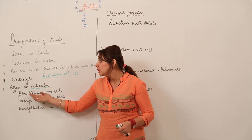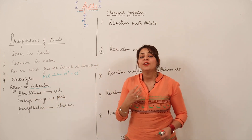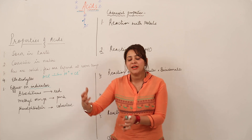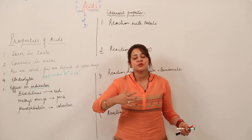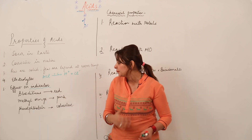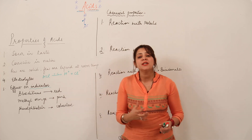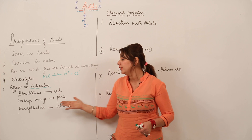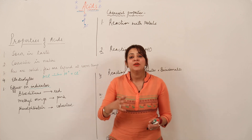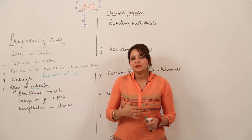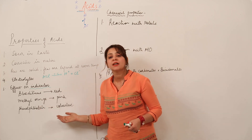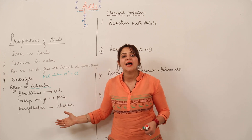Here are a few indicators to explain the effect of acids on them. Litmus: acids turn blue litmus red. The original color of litmus is purple, but in the lab it is used in two forms — blue litmus and red litmus. Acids show no effect on red litmus but turn blue litmus red. Methyl orange, whose original color is orange, turns pink when acid is added. Phenolphthalein remains colorless when acid is added, and turns pink when a base is added. These are the physical properties of an acid.